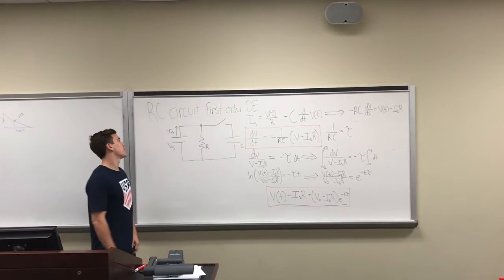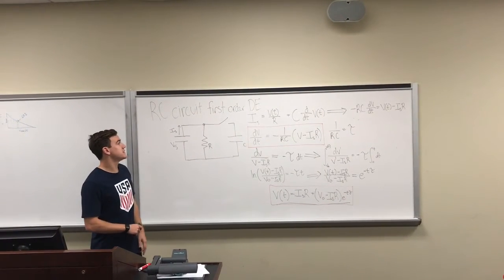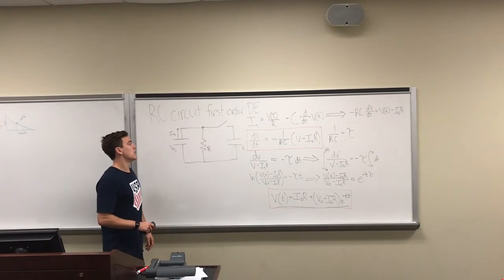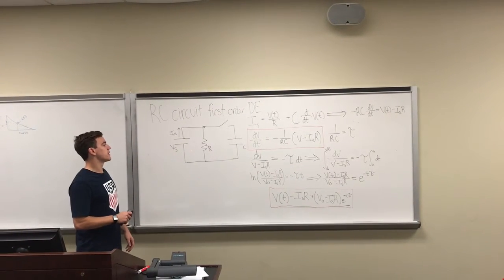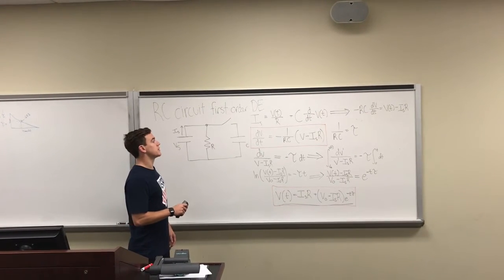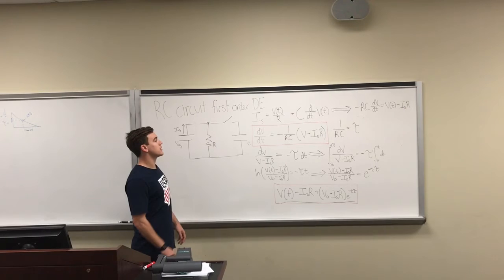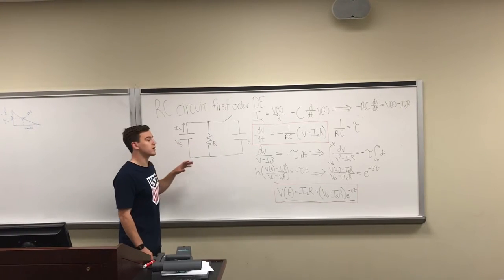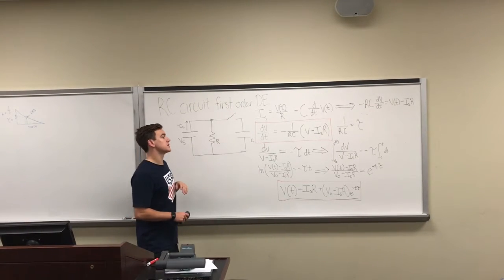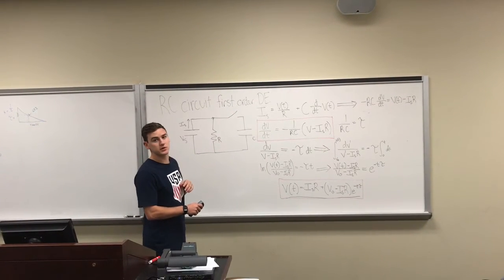We'll start by comparing the RC circuit first-order differential equation to the Newton's Law of Cooling differential equation. We start with just an RC parallel circuit, and then we can use KCL to determine that the current source is going to be equal to the current of your resistor and the current of your capacitance. Through manipulation of that equation, you receive the overall differential equation.